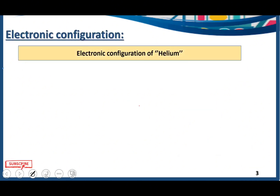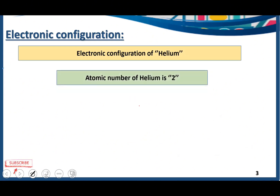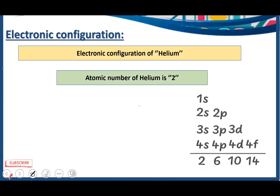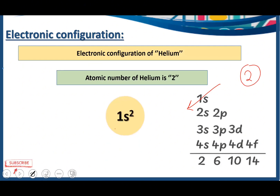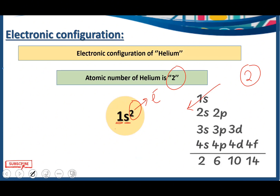The electronic configuration of helium — helium is the second element in the periodic table, atomic number 2. In the s subshell we can accommodate 2 electrons, so we write 1s2. We are done with the electronic configuration of helium. Here, this is the energy level, this is the subshell, and in the superscript you can see the number of electrons. We are just concerned with the number of electrons in electronic configuration.